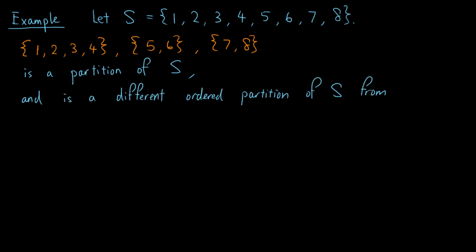And it is a different ordered partition of S from the collection of three subsets: one containing the elements 1 to 4, the second containing the elements 7 and 8, and the third containing the elements 5 and 6.